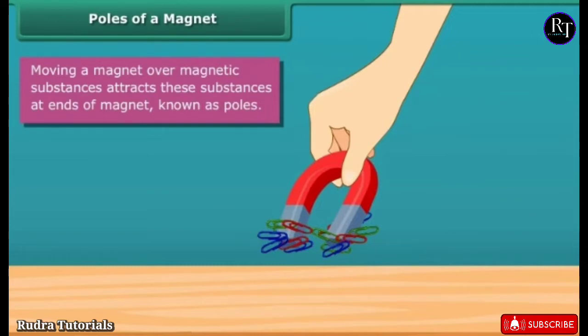These particular parts are generally the two ends of the magnet. These ends are called poles of the magnet.